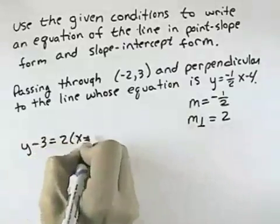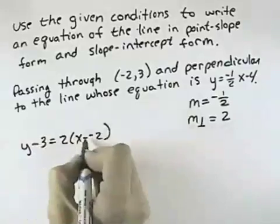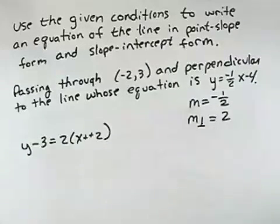So what we have then is y minus the y value of our point equals the slope times x minus the x value of the point, where x minus negative 2 becomes plus 2. And that would be the equation in point-slope form.